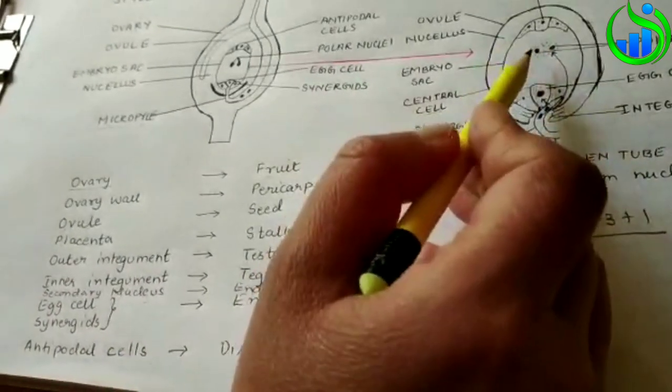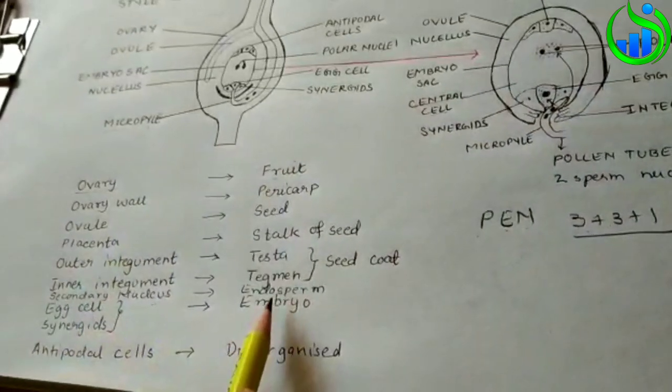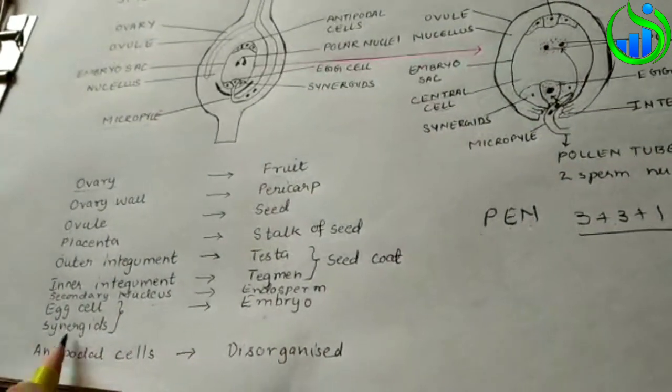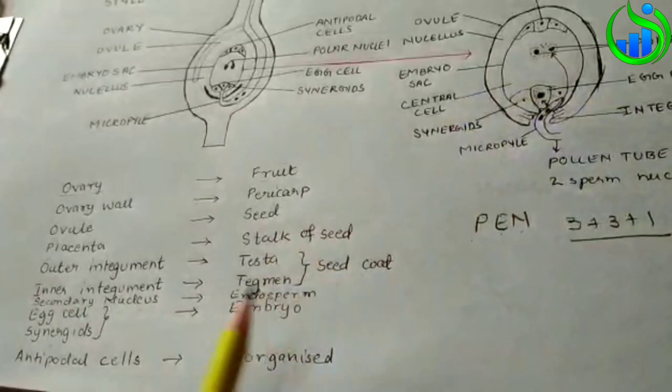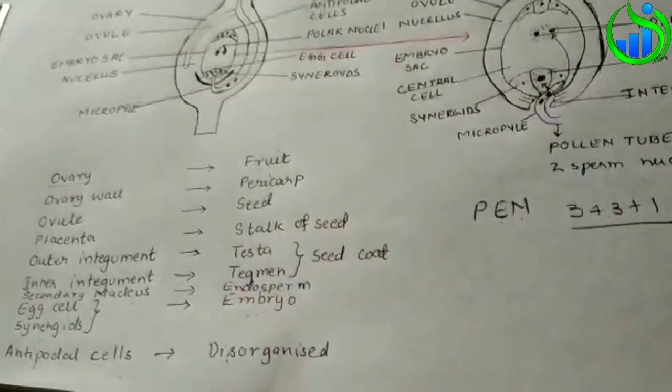The triple fusion gives endosperm. Egg cell becomes embryo. The synergids and antipodal cells are disorganized.